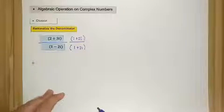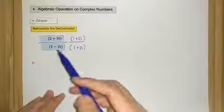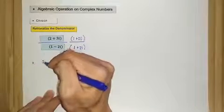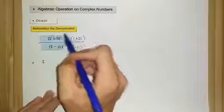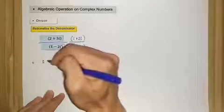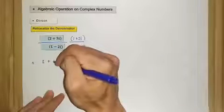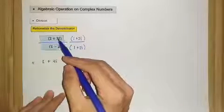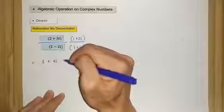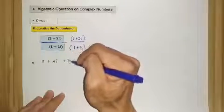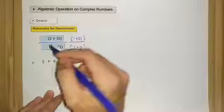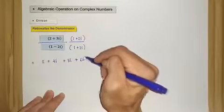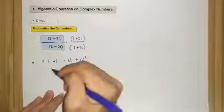Expanding the numerator: 2 times 1 is 2, 2 times 2i is 4i, then 3i times 1 gives plus 3i, and finally 3i times 2i gives plus 6i squared.